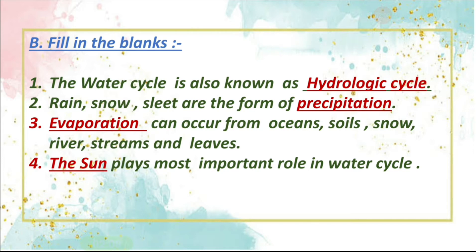Second question is, rain, snow, sleet are the form of dash. Here answer is precipitation. You have to fill precipitation. Third is evaporation. Here evaporation is the answer I have already filled. Can occur from oceans, snow, river, streams and leaves. So here you have to fill evaporation.